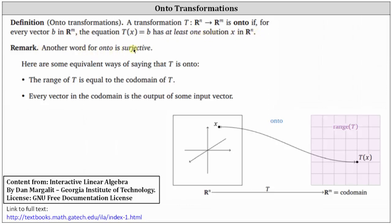Another word for onto is surjective. Here are some equivalent ways of stating T is onto: the range of T is equal to the codomain of T. Looking at the mapping below, which shows an onto transformation, notice how the range and codomain are both R^2. And every vector in the codomain is the output of some input vector.